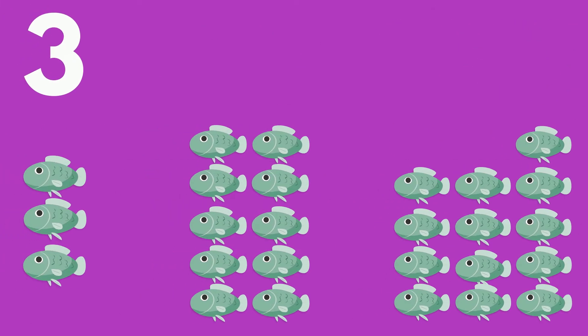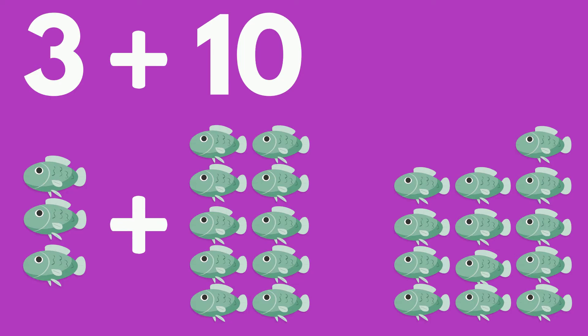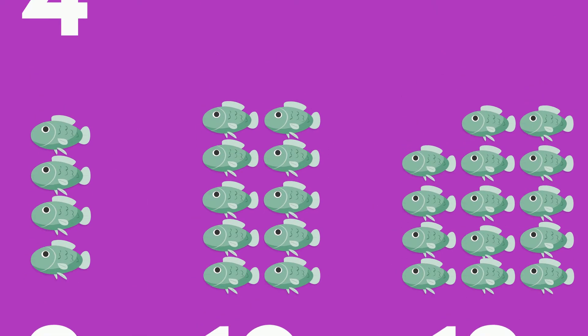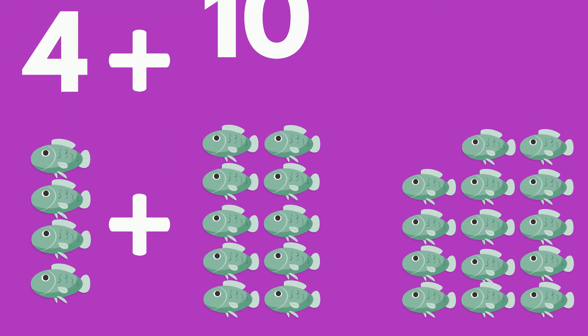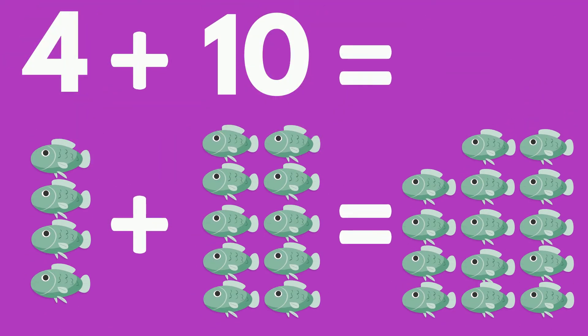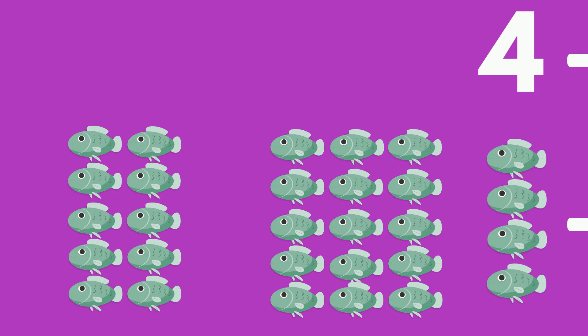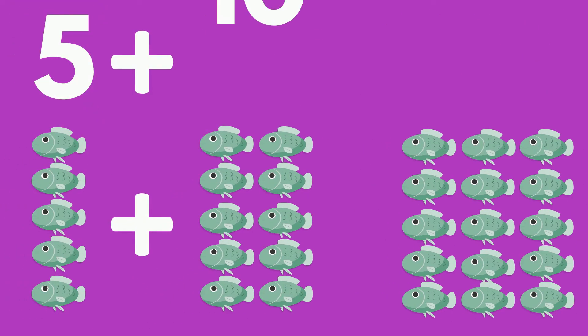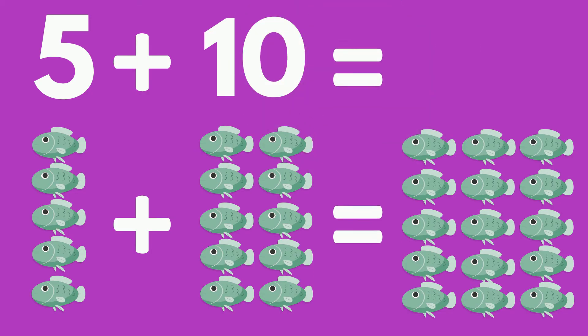3 fish plus 10 fish equals 13 fish. 4 fish plus 10 fish equals 14 fish. 5 fish plus 10 fish equals 15 fish.